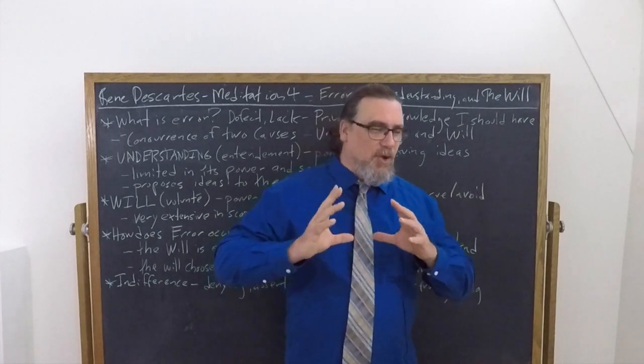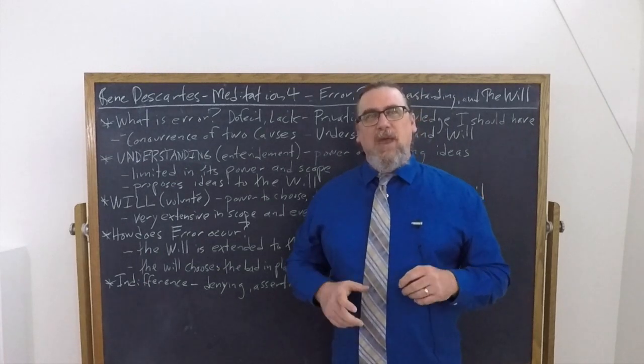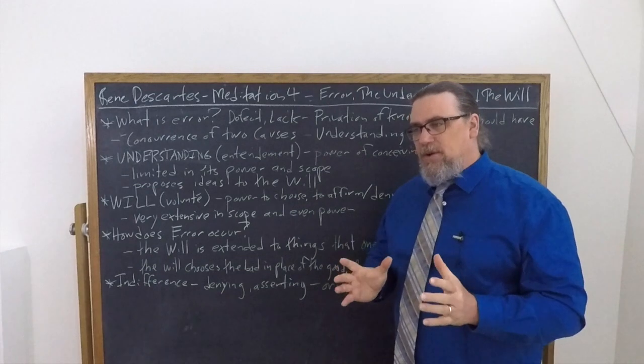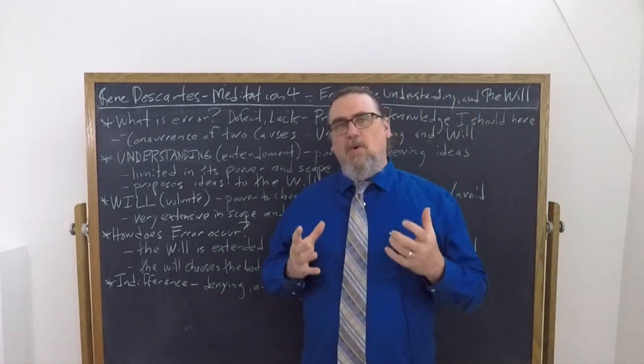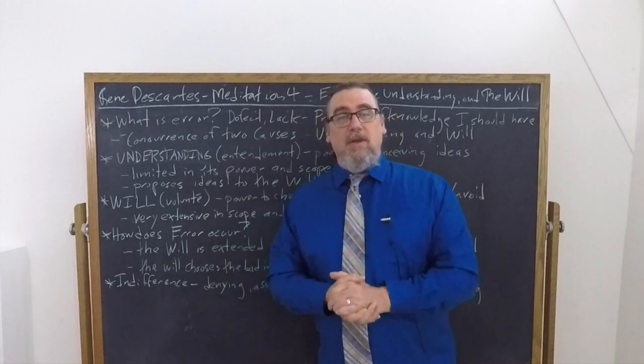So this requires understanding what happens when we go astray, which is what error means. Errare is to go astray, to lose the path, the path to truth, the path to what is good for us. So in considering this, in Meditation Four, Descartes is going to start out by telling us what error is to begin with.